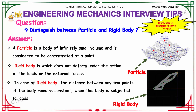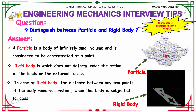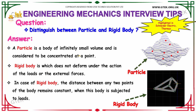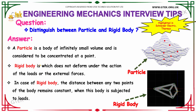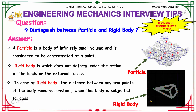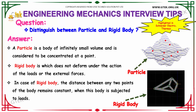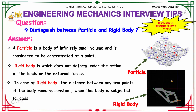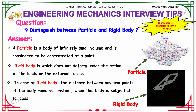Next question: distinguish between particle and rigid body. A particle is a body of infinitely small volume and is considered to be concentrated at a point. A rigid body is one which does not deform under the action of loads or external forces. In the case of a rigid body, the distance between any two points of the body remains constant when the body is subjected to loads.